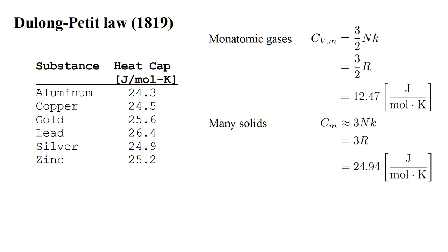The Dulong-Petit law predicts that many solids have a molar heat capacity about twice this: 3R equals 24.94 joules per mole Kelvin. This leads us to ask, why do some solids have twice the molar heat capacity of some gases?